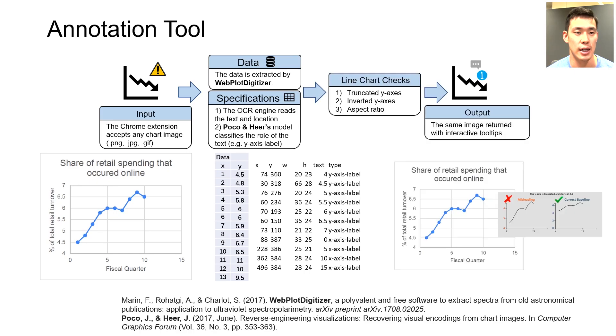We finally run three main checks for truncated y-axes, inverted y-axes, and abnormal aspect ratio. In this particular case, the y-axis is truncated, so we reconstruct a corrected graph to show what it looks like with a zero baseline.